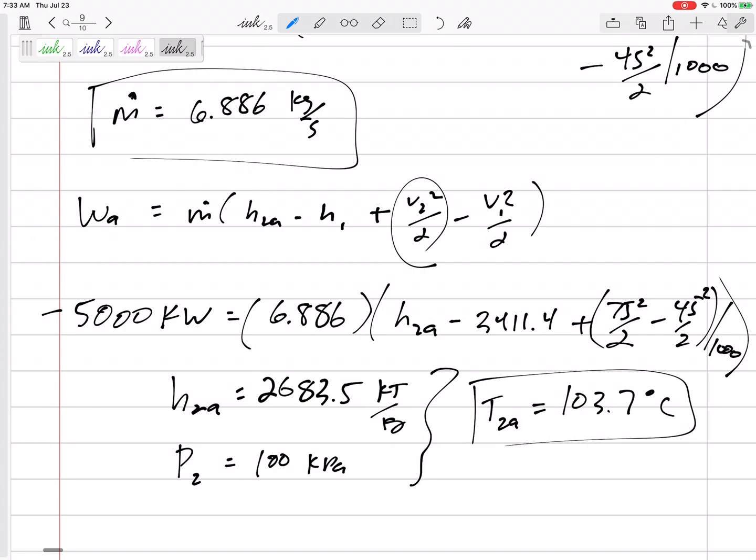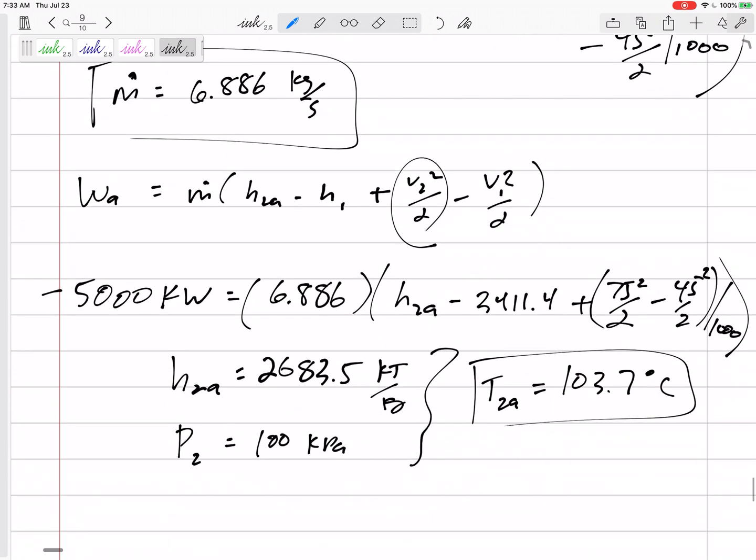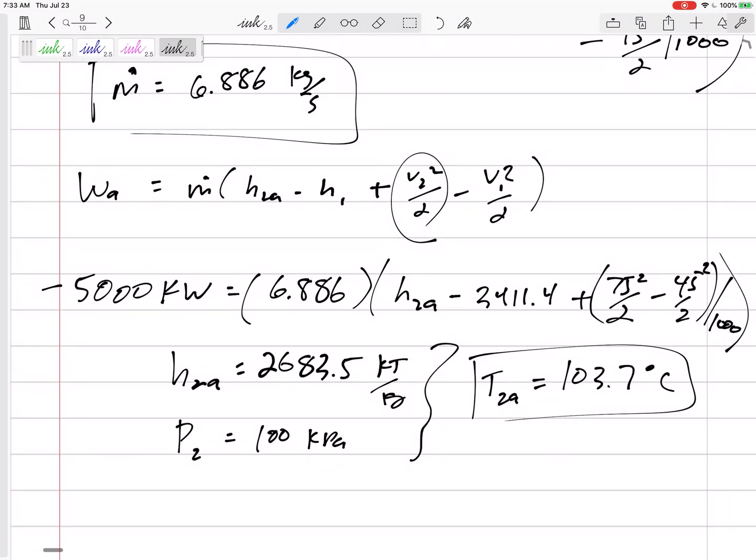Delta h, sometimes cp delta T for ideal gases. It's tough, right? But look back through your notes to be able to handle turbines, compressors, nozzles, any steady flow device I could throw at you. It might be an ideal gas, it might be steam or refrigerant like this one. Okay, good luck.